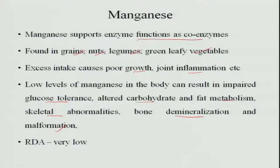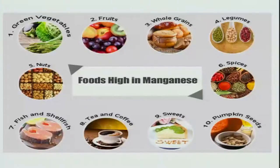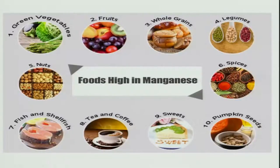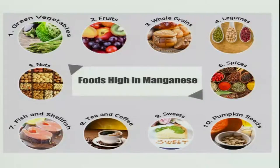The RDA for manganese is very low. Food sources include green vegetables, fruits, whole grains, legumes, and spices — almost all foods are rich in manganese. Therefore, deficiency is very rare.